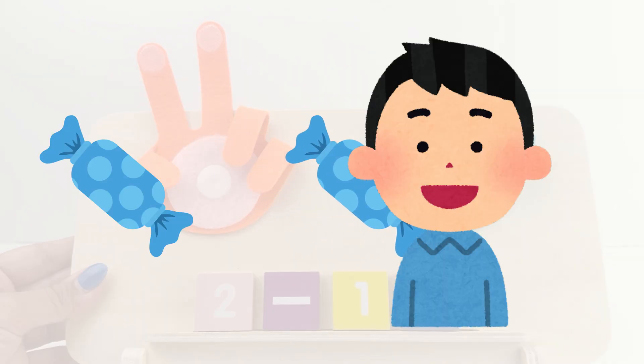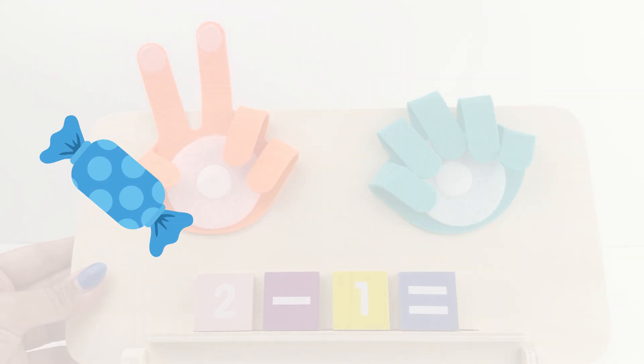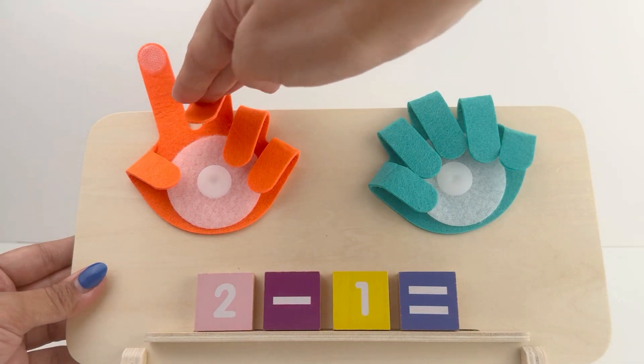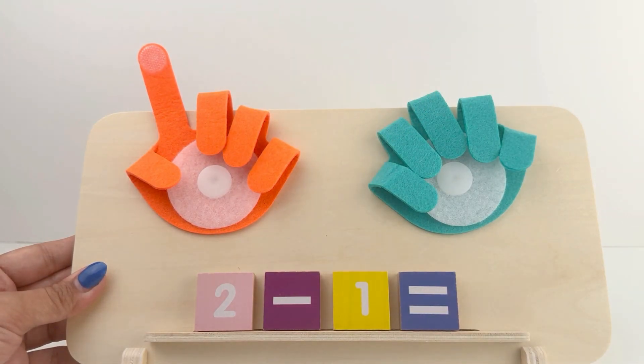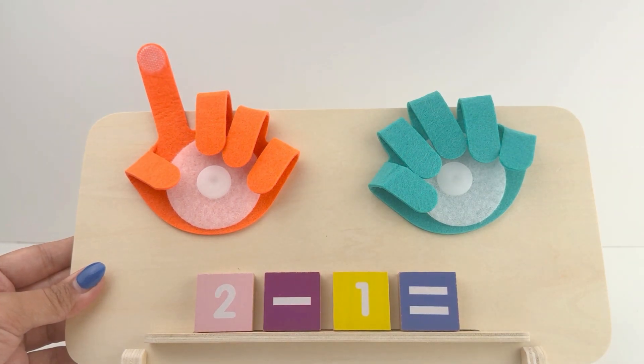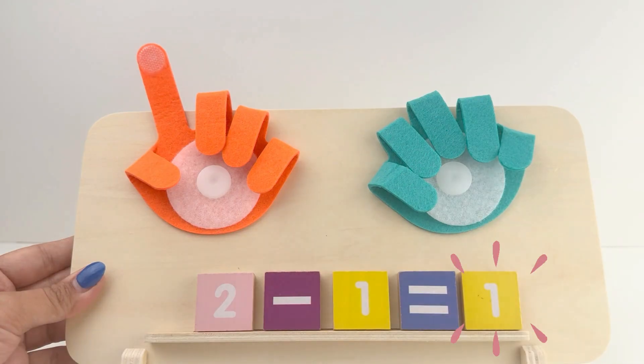Now, I gave 1 candy to a friend. Let's close 1 finger on the orange hand. Now, how many candies am I left with? Count with me. 1. 2 minus 1 equals 1.